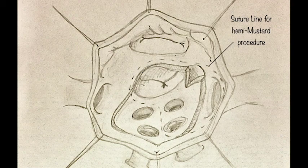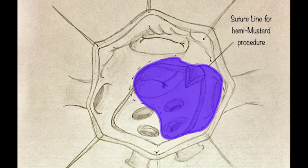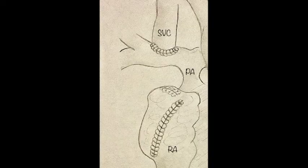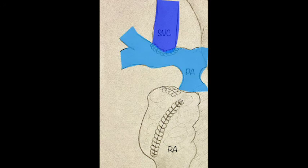An alternative approach entails using foreign material, for example Gore-Tex, to construct the baffle and redirect only the systemic venous return from the inferior caval vein to the tricuspid valve, performing the so-called hemi-Mustard procedure. A bidirectional Glenn shunt is in this case necessary to direct the venous return from the superior caval vein directly into the right pulmonary artery.